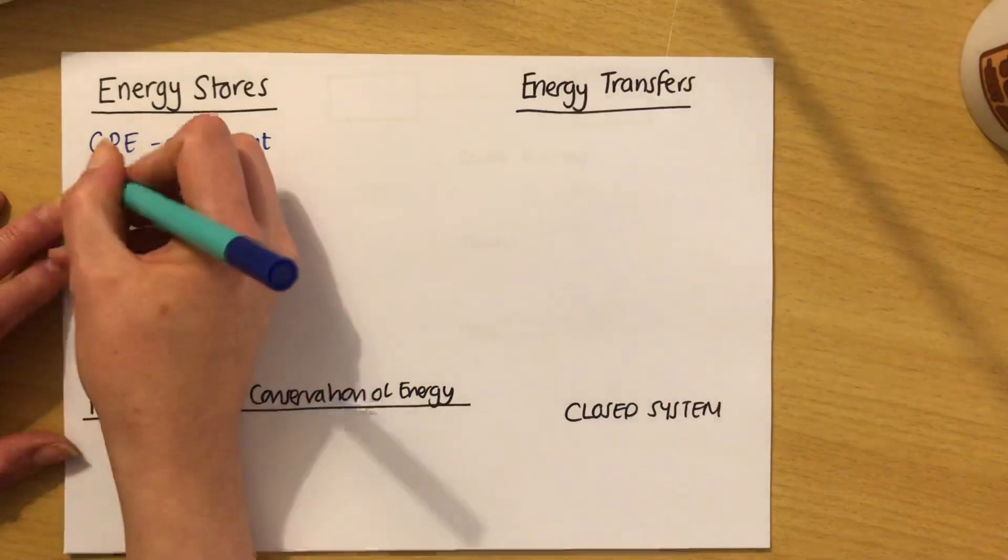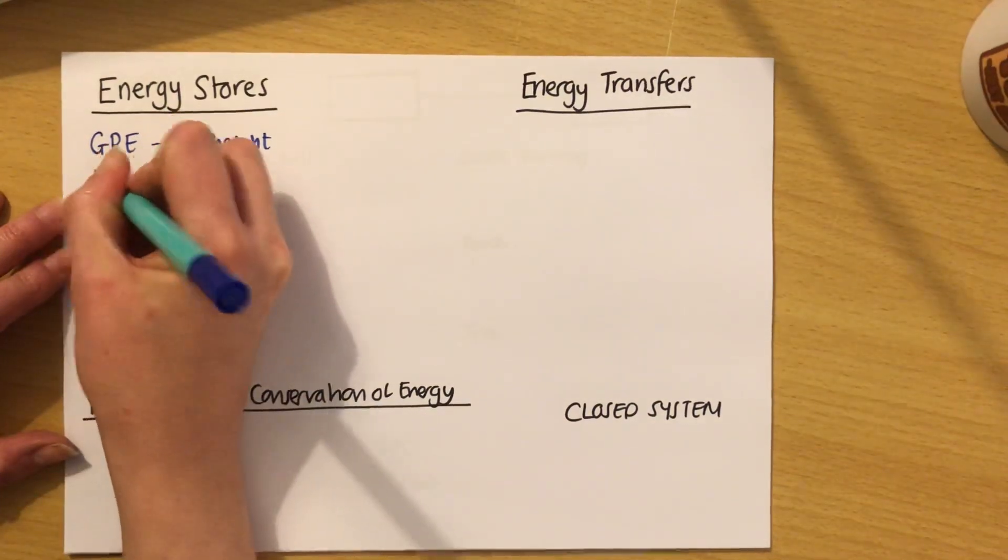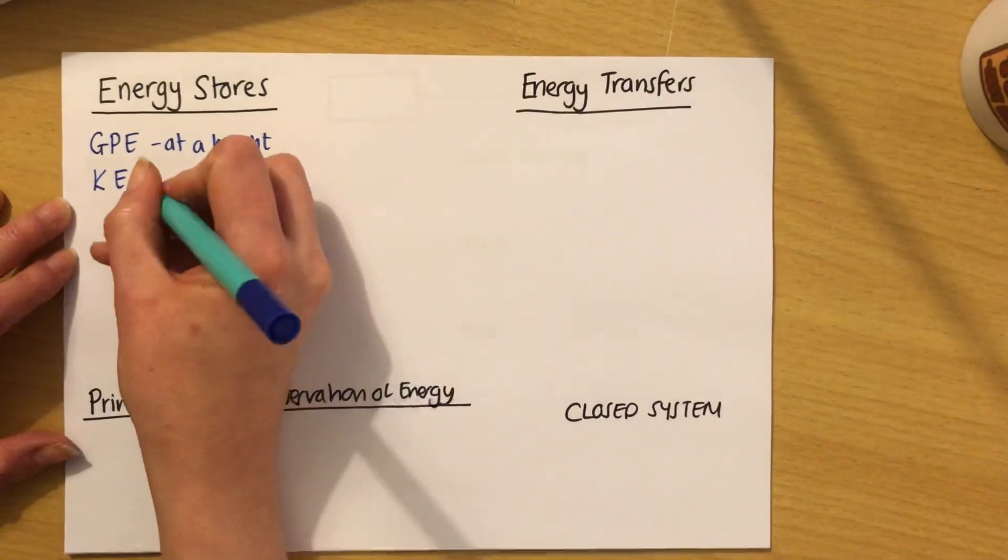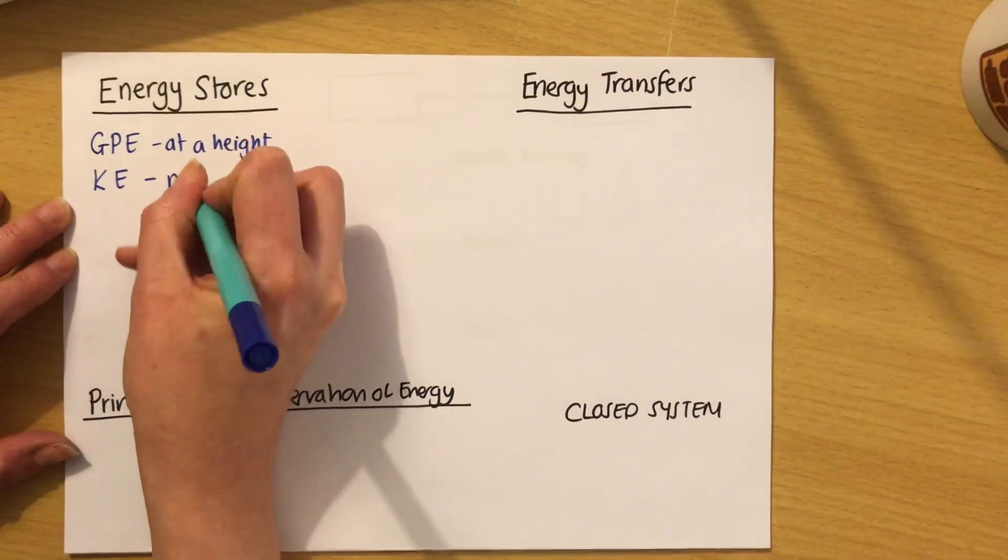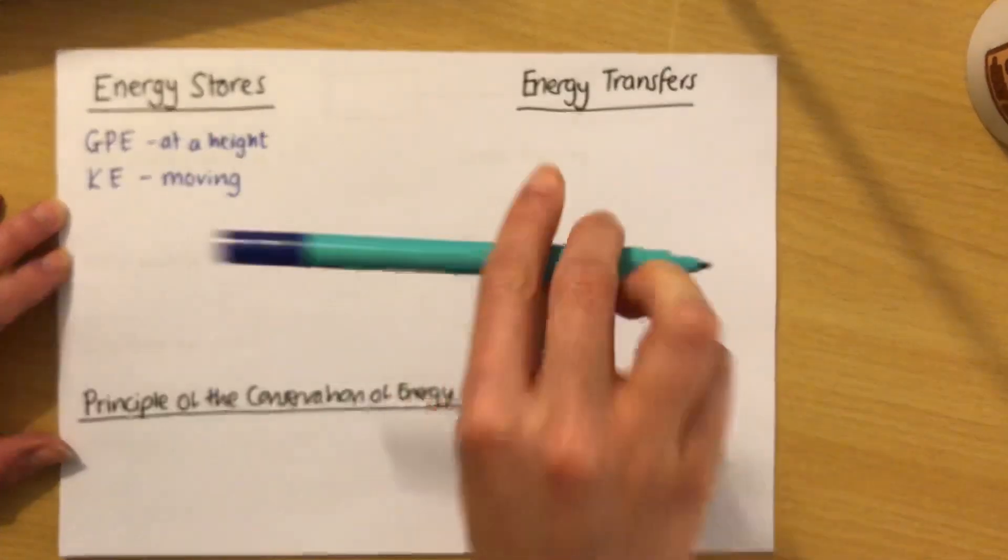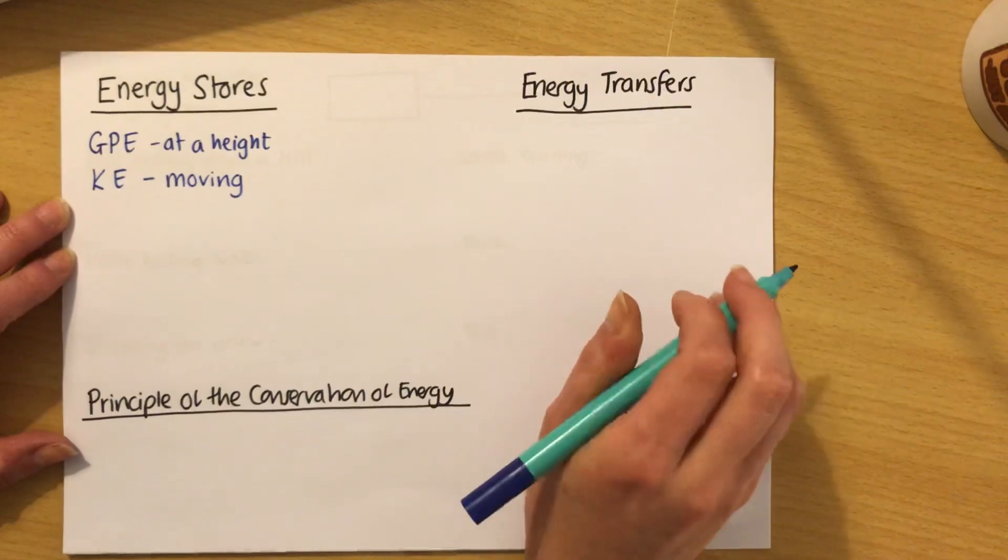The second one is kinetic energy, or KE as it's often written, because once again we're lazy. Kinetic energy is the energy that anything that is moving has. So when I lift the pen and then drop it, it will move and have kinetic energy.